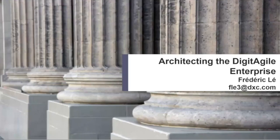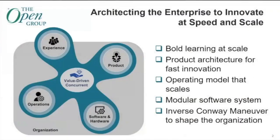The Agile Architecture Standard addresses these problems. It has been designed to complement process-oriented Agile frameworks, and it provides a comprehensive approach to bring the architectural concern back to the center of digital transformation. Let's now introduce the main building blocks of the Agile Architecture Standard.